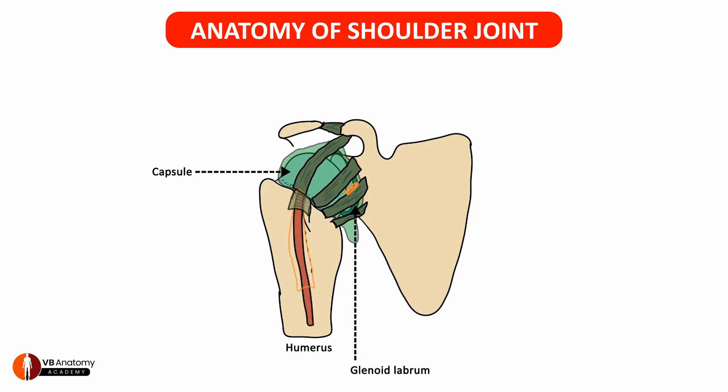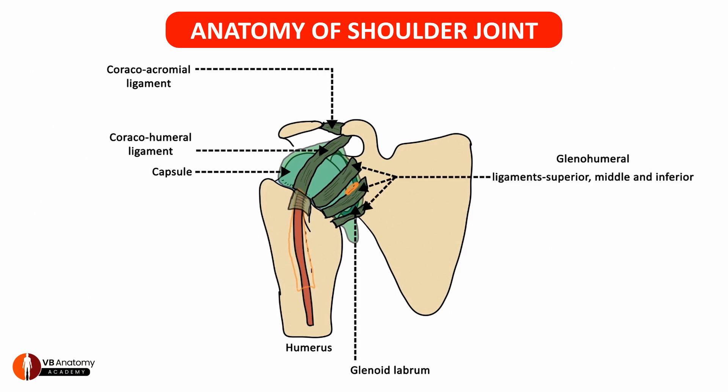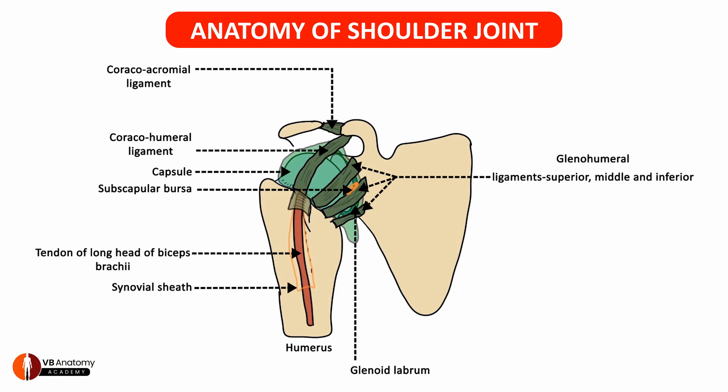The capsule is supported superiorly by the coracoacromial ligament, superiorly by the coracohumeral ligament, and anteriorly by the three glenohumeral ligaments — superior, middle, and inferior. There is a small gap in the capsule for the passage of the subscapular bursa, and laterally the synovial sheath emerges out through the bicipital groove enclosing the tendon of biceps within it. The synovial sheath and the tendon are held down in place by the transverse humeral ligament.